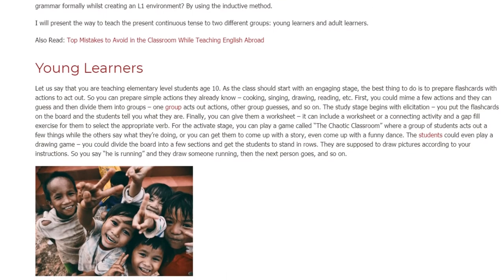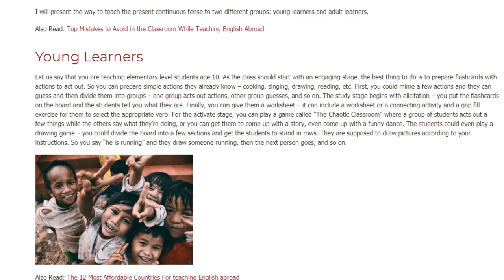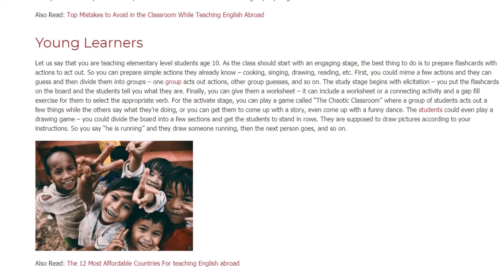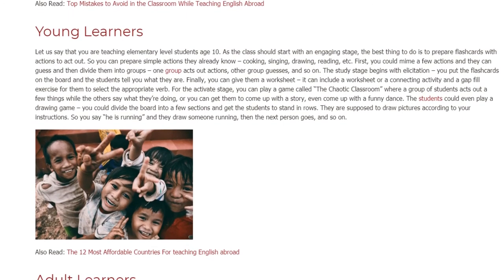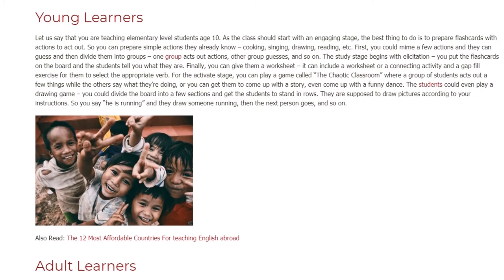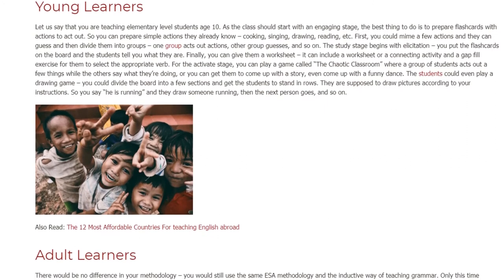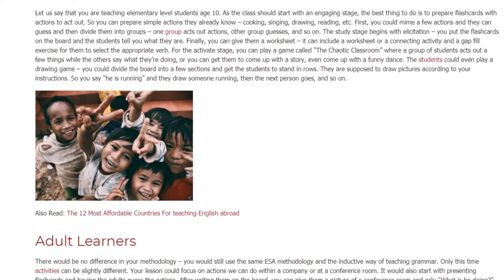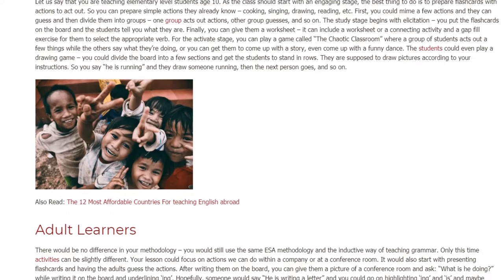The study stage begins with elicitation. You put the flashcards on the board and the students tell you what they are. Finally, you can give them a worksheet — it can include a matching activity and a gap fill exercise for them to select the appropriate verb. For the activate stage, you can play a game called the chaotic classroom where a group of students acts out a few things while the others say what they're doing. Or you can get them to come up with a story or even a funny dance.